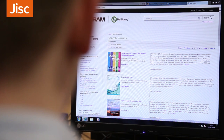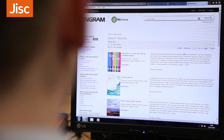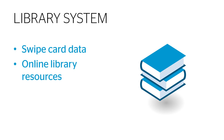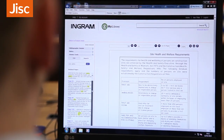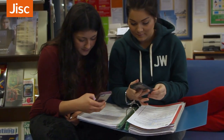An increasingly important source of information for learning analytics is library data. We've traditionally known quite a lot about how students use libraries — when you physically go into a library you swipe in and we have a record of that. But these days most sources are online, and online library resources give us far more information: we can see what students are reading, which journals they're looking at, and how frequently they download material, giving us a very rich understanding of the relationship between learning resources and the learning process.